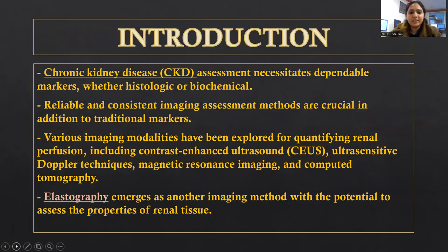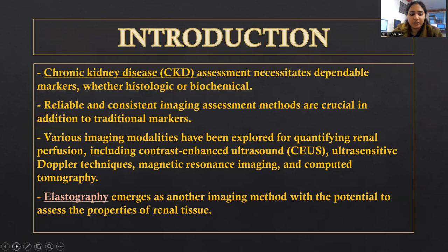Introduction. Chronic kidney disease assessment necessitates dependable markers, whether histological or biochemical. Reliable and consistent imaging assessment methods are crucial in addition to traditional markers. Various imaging modalities have been explored for quantifying renal perfusion, including contrast-enhanced ultrasound, ultrasensitive Doppler techniques, MRI, and CT. Elastography emerges as another imaging method with the potential to assess the properties of renal tissue.